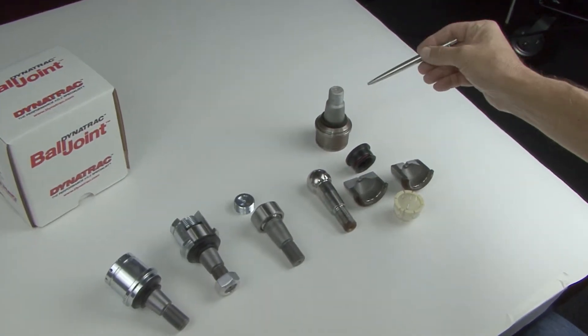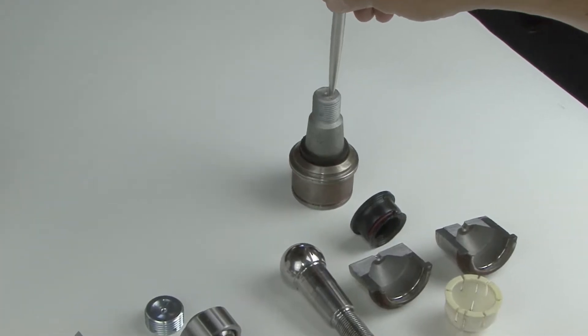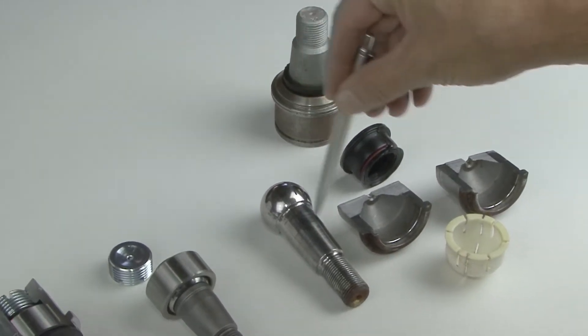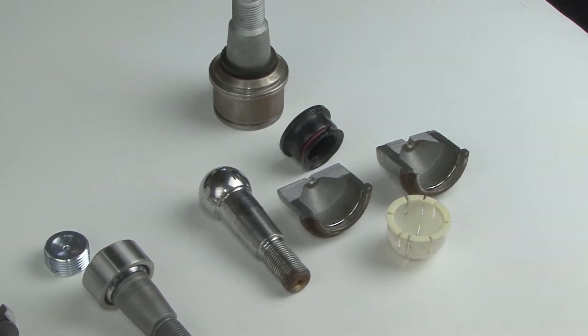We have a stock ball joint out of a Dana 60 here, and this is kind of what it looks like when you cut it apart. When you cut it apart, you'll notice that the parts that do most of the work are these two pieces right here.